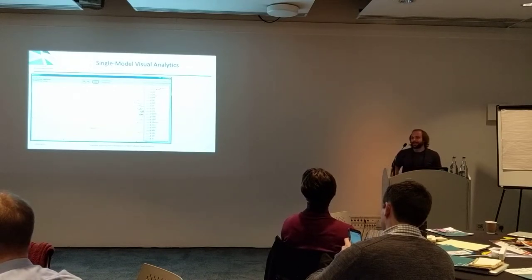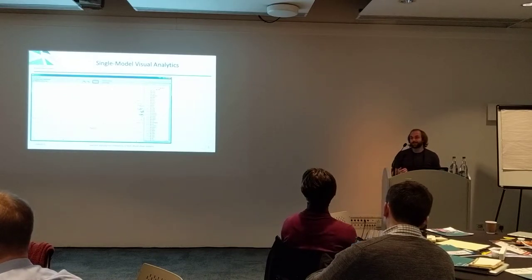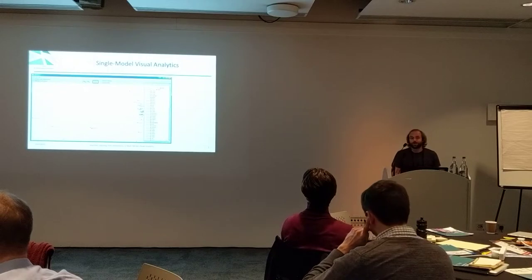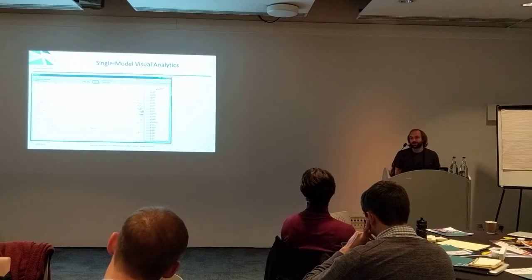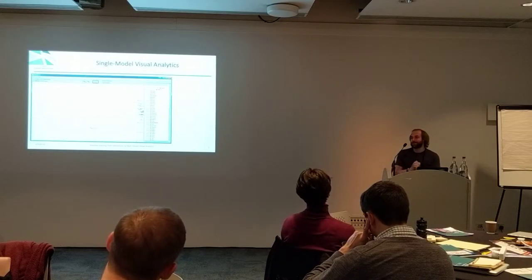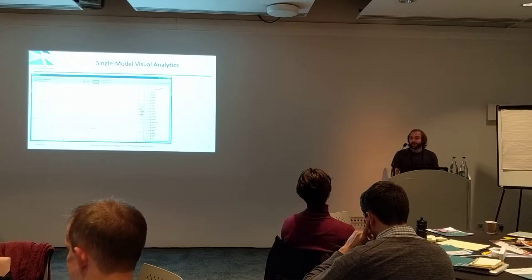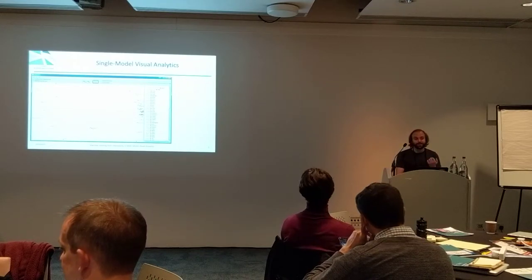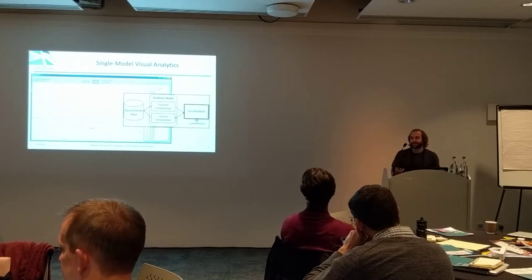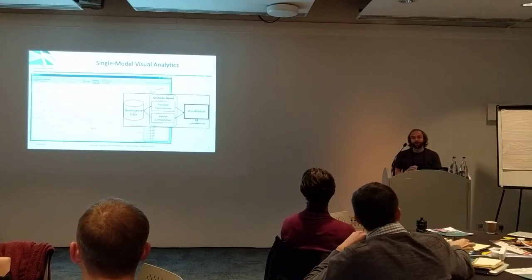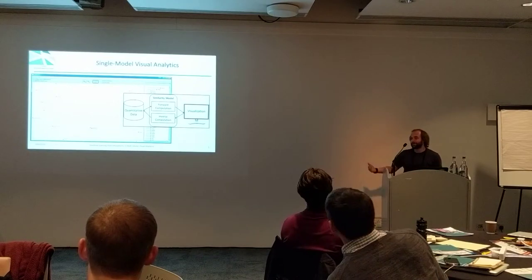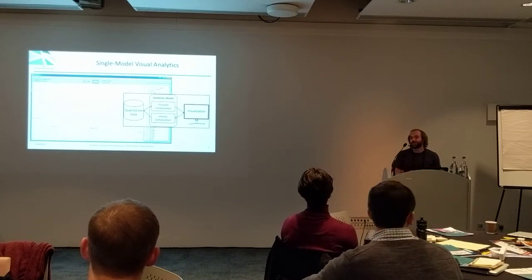There's a lot of complexity in designing a system like this. One big problem is a challenge we've called the 'with respect to what' problem. If you're interacting with this data, what are you dragging things with respect to? How do we determine what the meaning of a user's interaction really is? Even with all of this interaction and complexity, this is just a single model system — a similarity model where one direction does the projection and another direction does the learning.